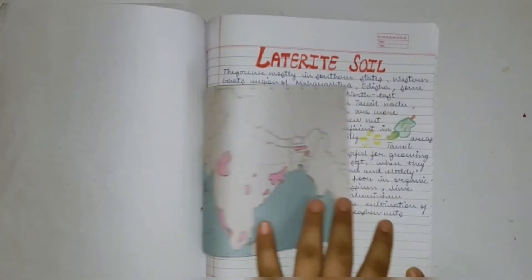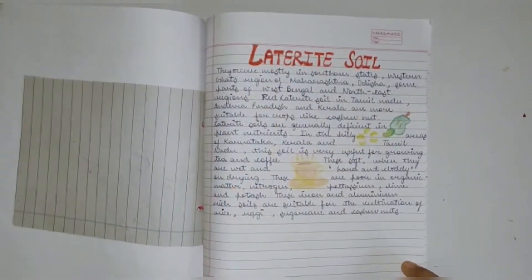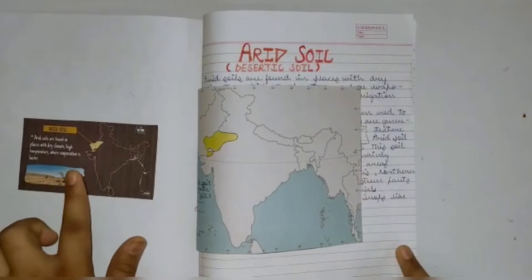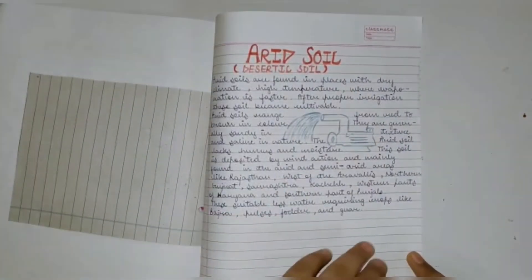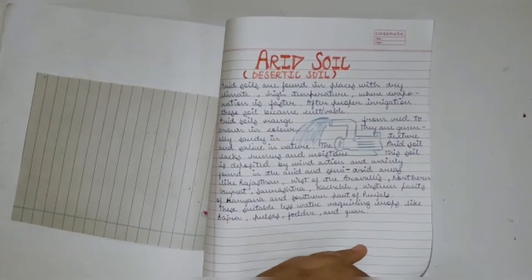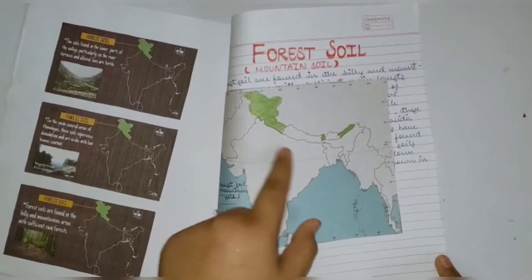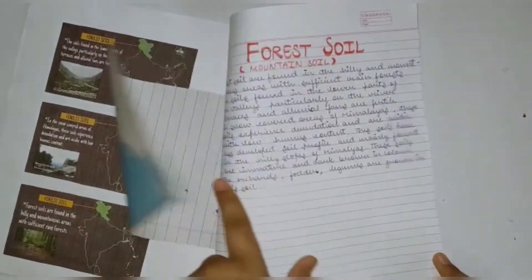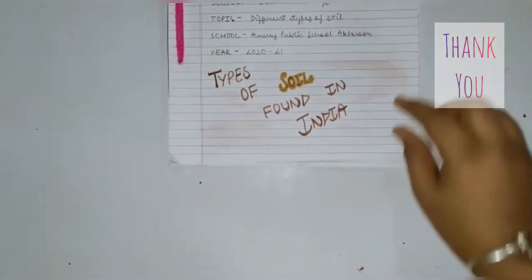Here we have laterite soil with map and information. Here is a red soil, also known as desertic soil. Here is forest soil or mountain soil — same process: map, information, and printouts. So our file is done. Thank you.